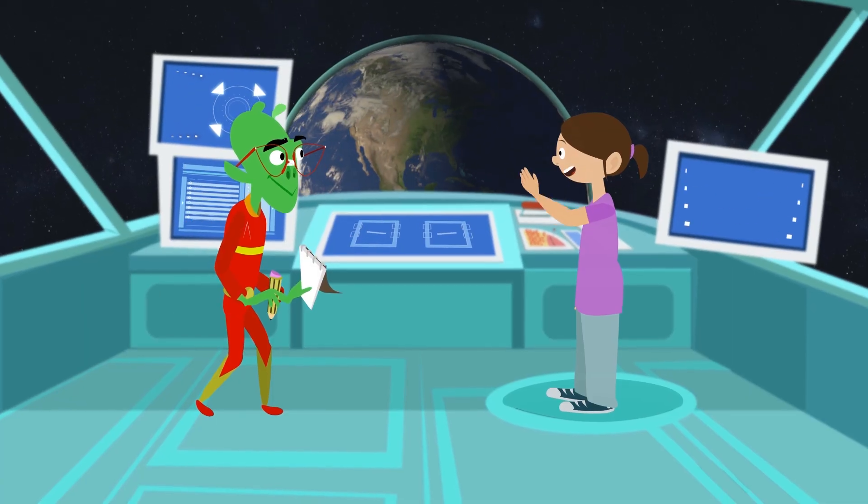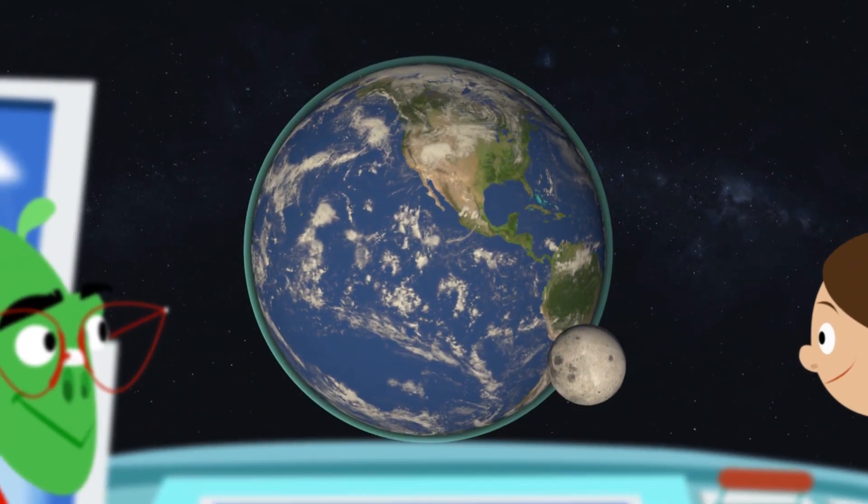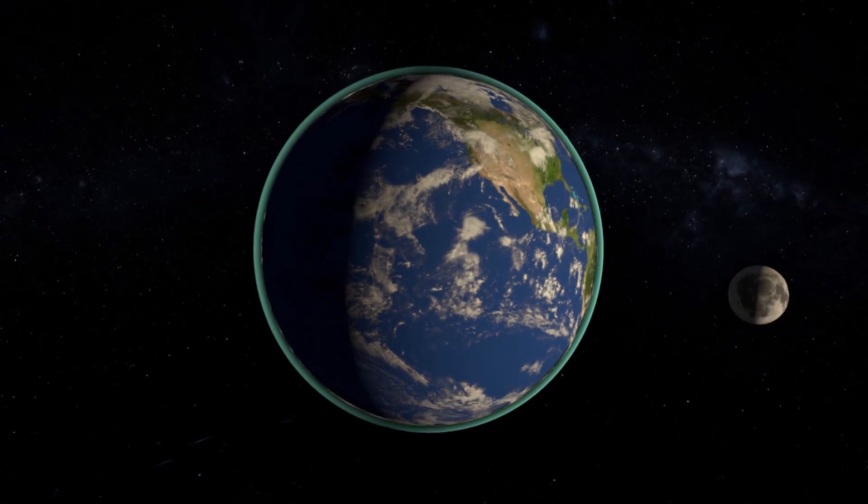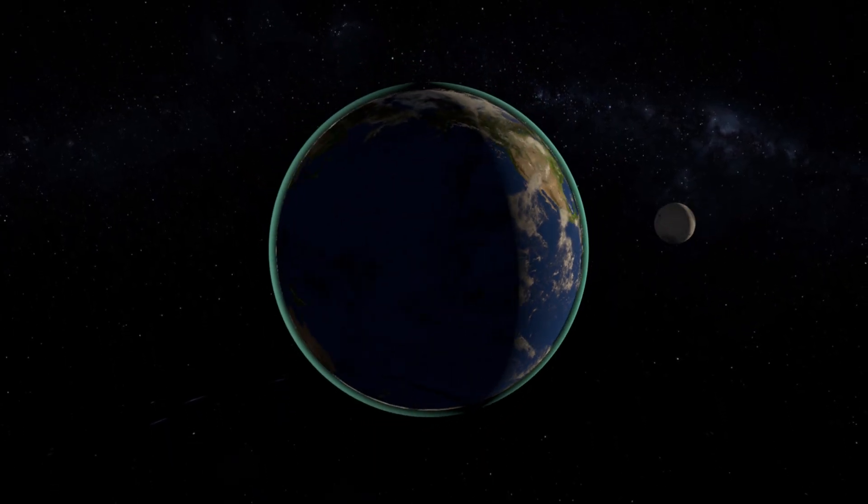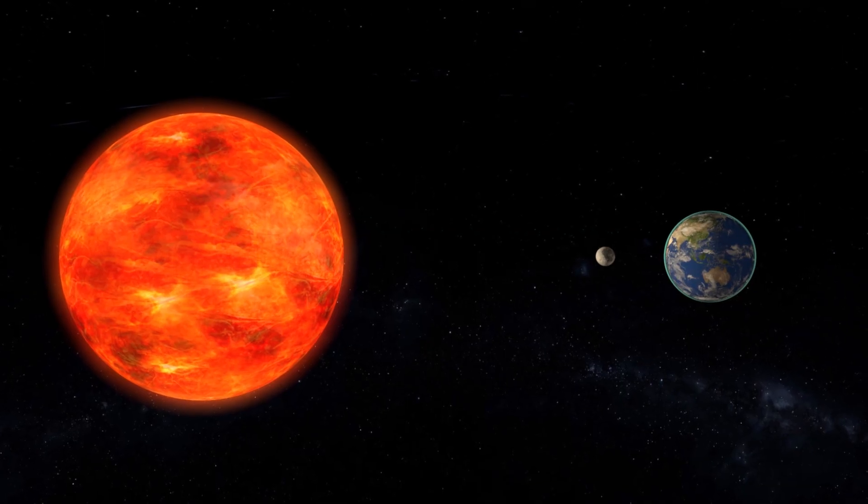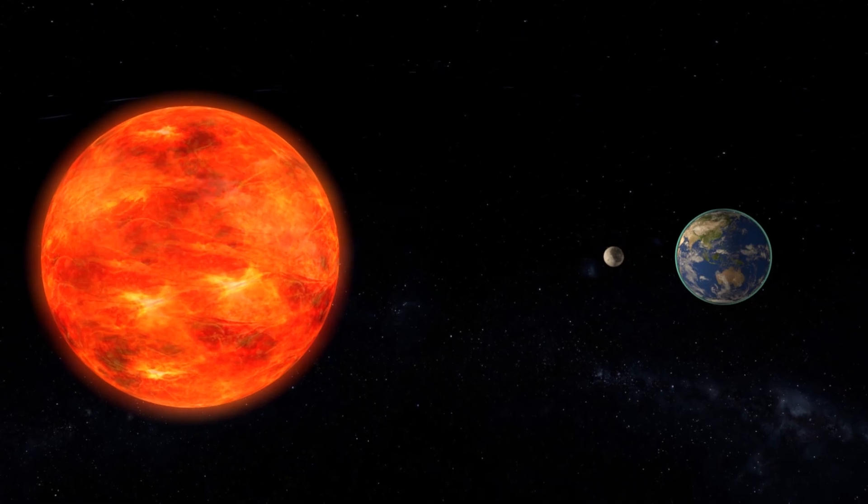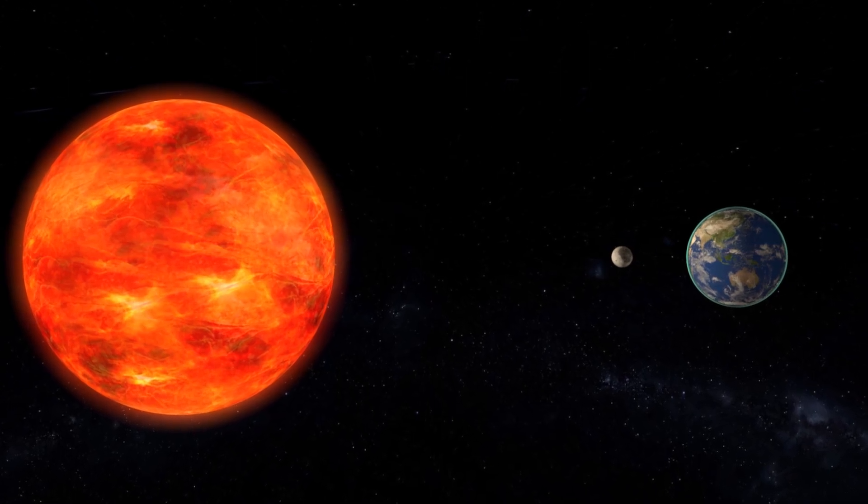Very well then, pay close attention. Sometimes the Sun, the Earth, and the Moon align together forming an eclipse. On Earth we can see two types of eclipses: solar eclipse like this one right here.